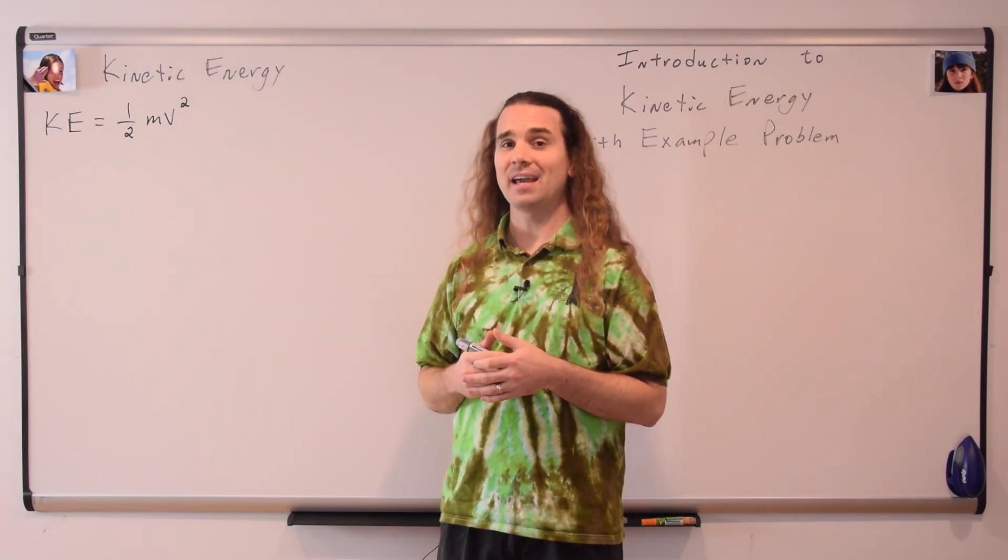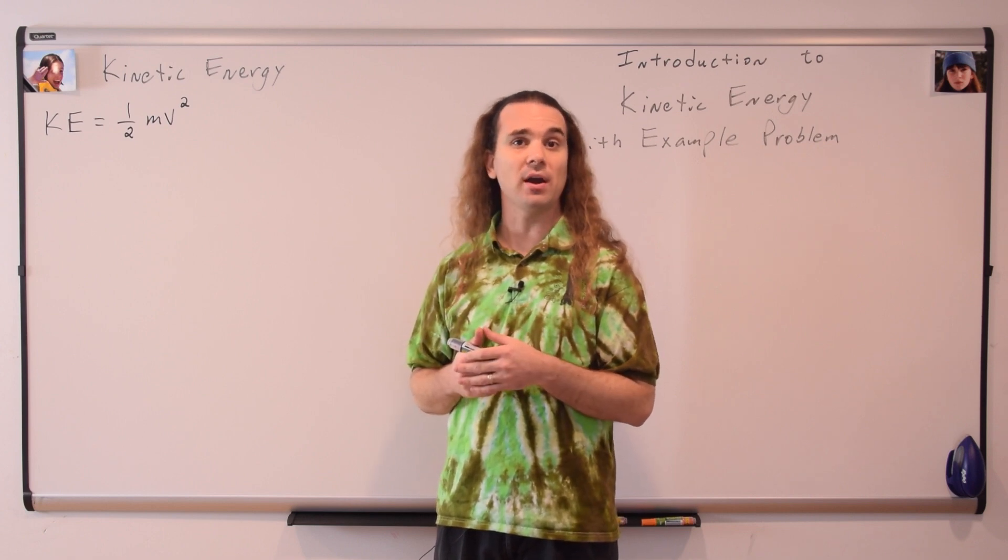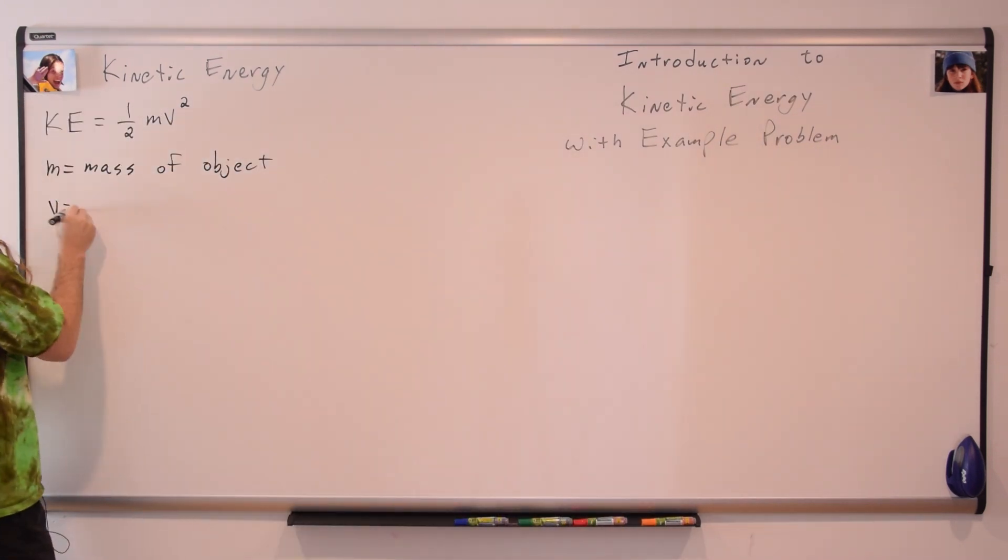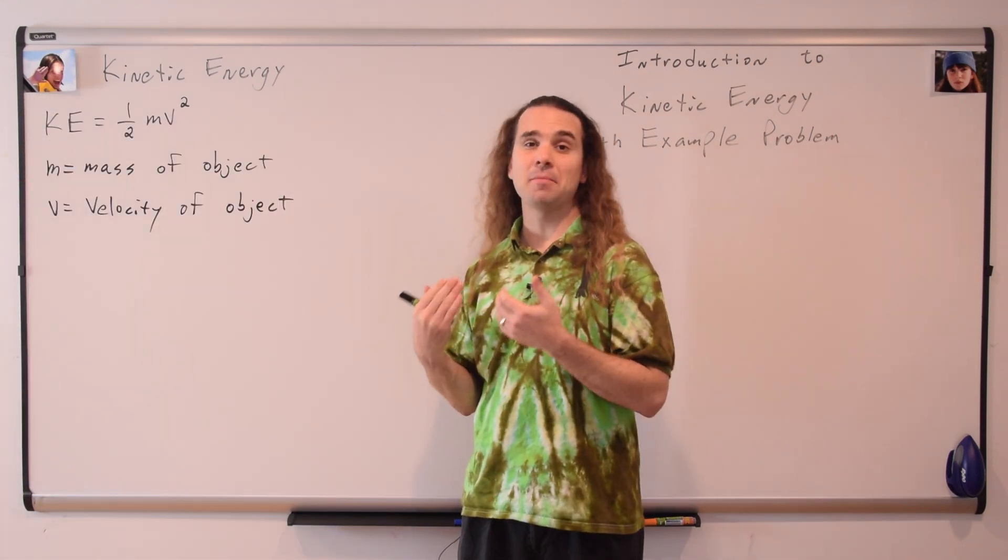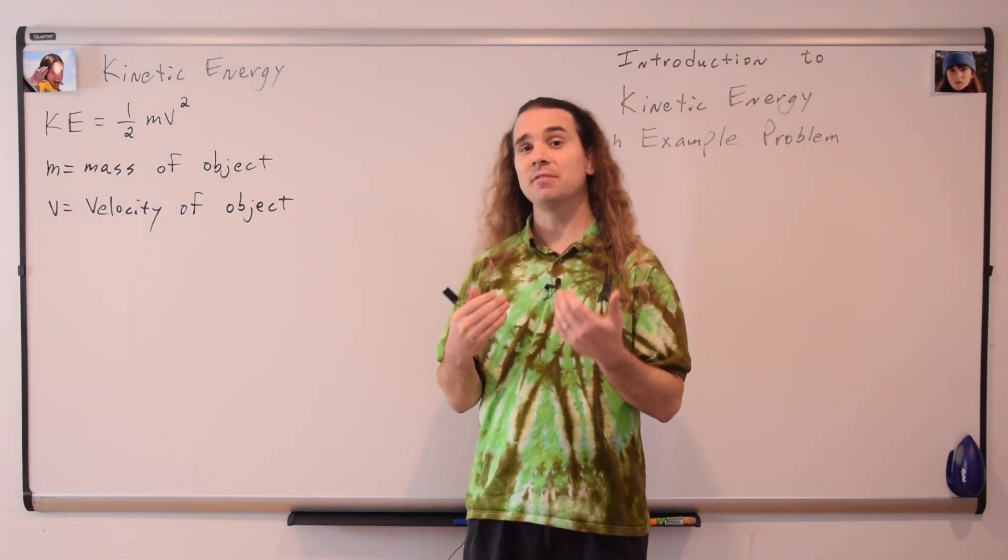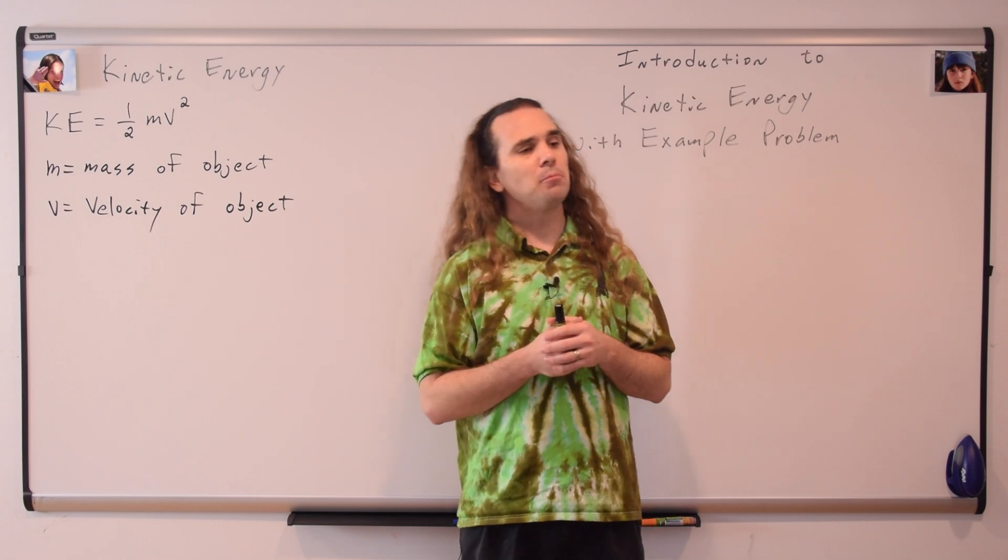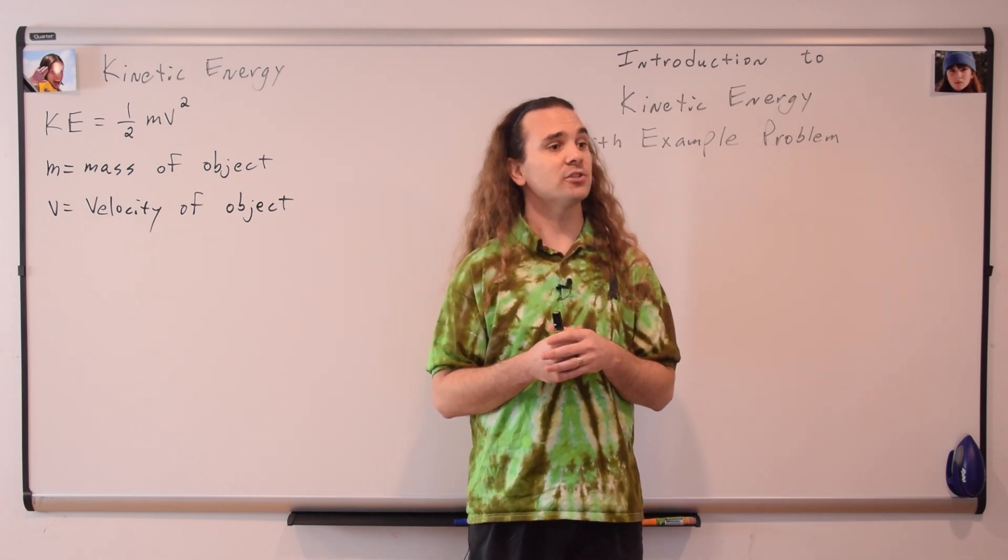The equation for kinetic energy is KE equals one-half mv squared, where m is the mass of the object and v is the velocity of the object. Billy, could you please determine the units for kinetic energy?